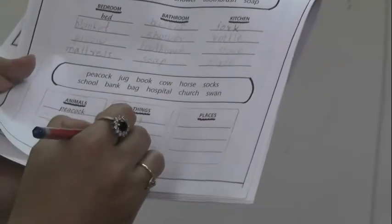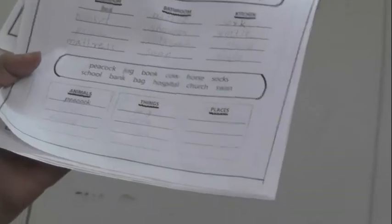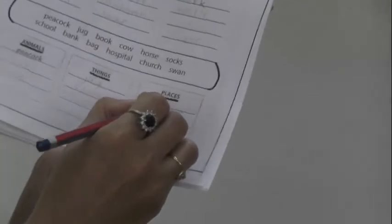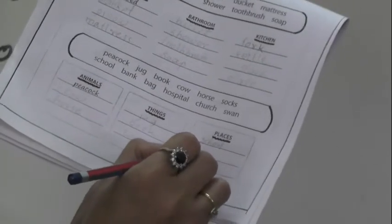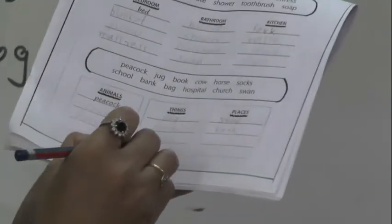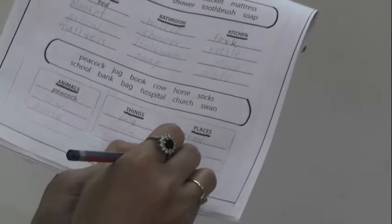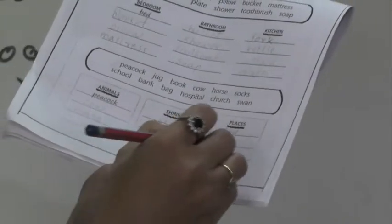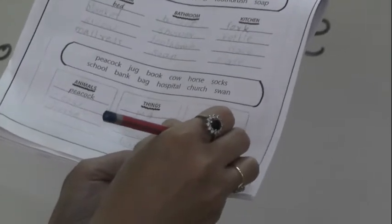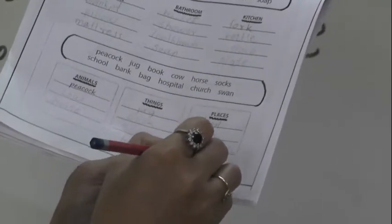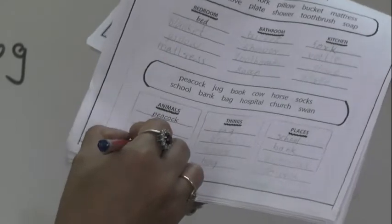Then horse in animals column. Then socks are the things. Then school is a place. Right in a place column. School. Then bank is a place. Where we go to deposit our money. Then bank is a thing. Right here. Hospital is a place. Where the sick people goes for a treatment. Then church is also a place.